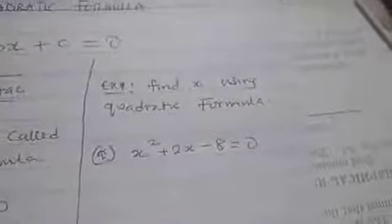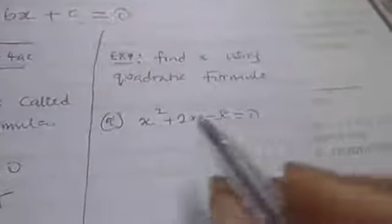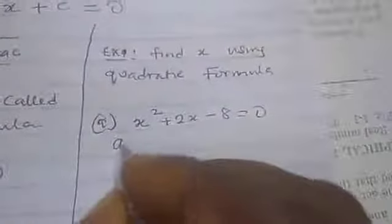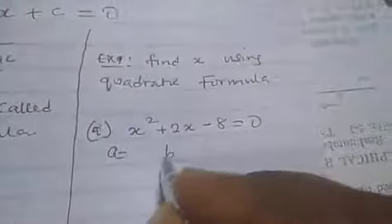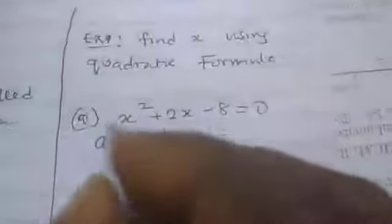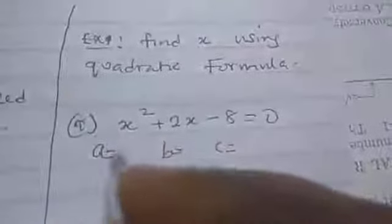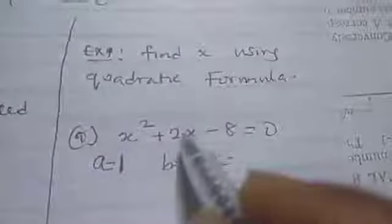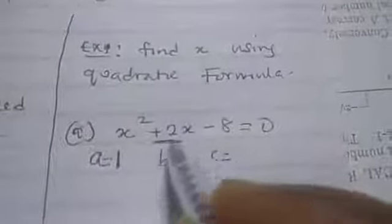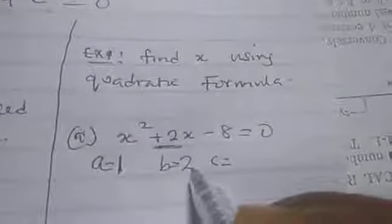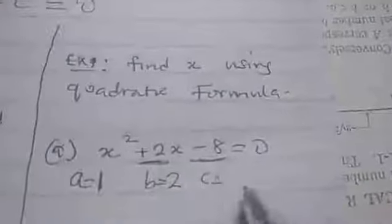Now let's take an example. We want to solve for x using the quadratic formula. The first thing is we need to note what our A is, what our B is, and what our C is. What is beside x squared is your A. You can see that there is nothing there, so you pick it as 1. What is beside x here is 2, so B is 2. And C is minus 8.